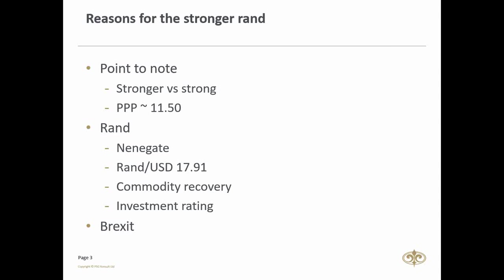Des van Rooyen was appointed finance minister, but three days later he was replaced by the previous finance minister, Pravin Gordhan. The rand, which was already in a bit of a slide up to December, fell an estimated 13 to 15 percent — depending on when you measure it — in two days, to a low of 17.91.